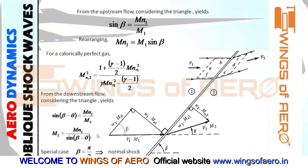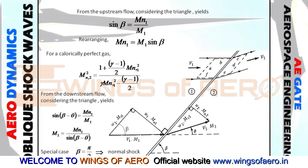You might wonder why we need to find M2 explicitly. These formulas are useful for solving problems when you don't have a shock table or gas table available. In a typical problem, the shock angle beta, the deflection angle theta, and the upstream Mach number M1 are given. So the given quantities are M1, theta (deflection angle), and beta (shock angle).